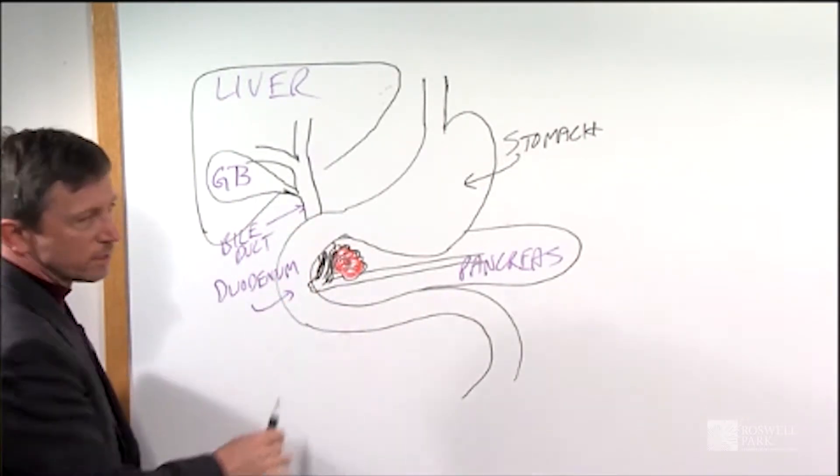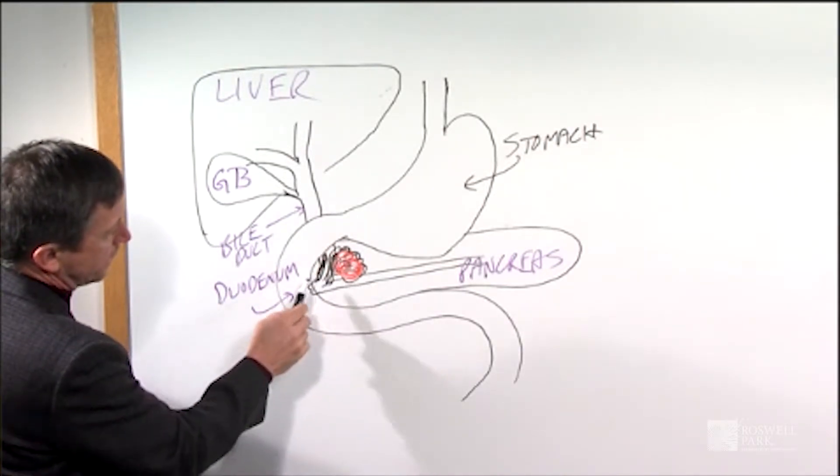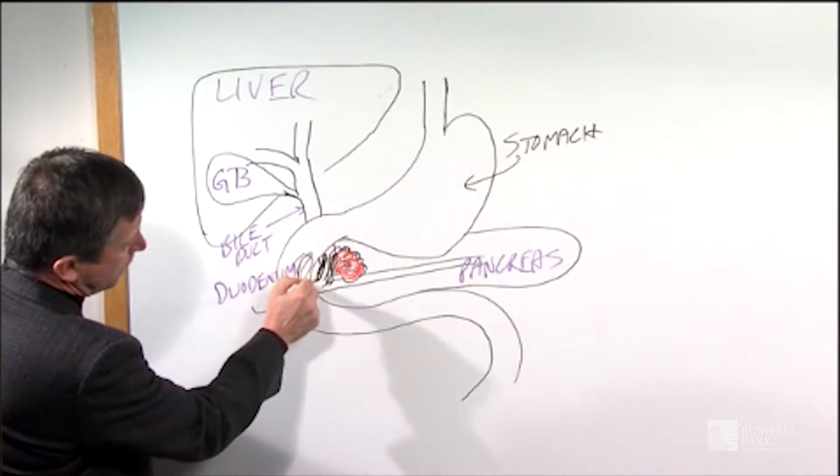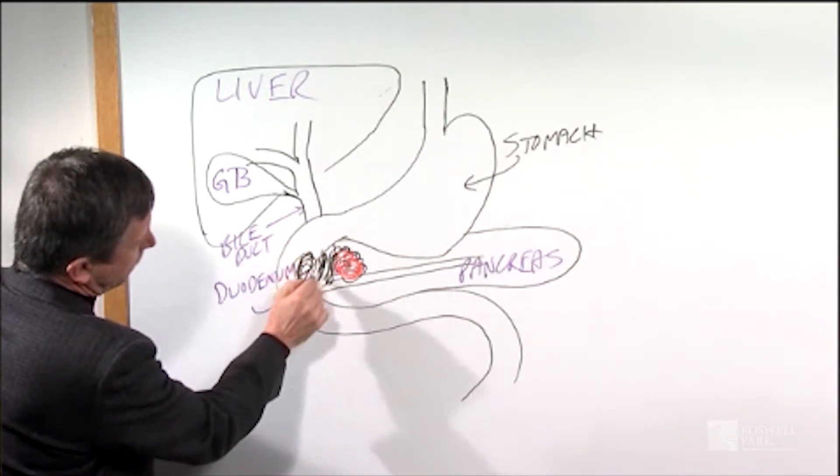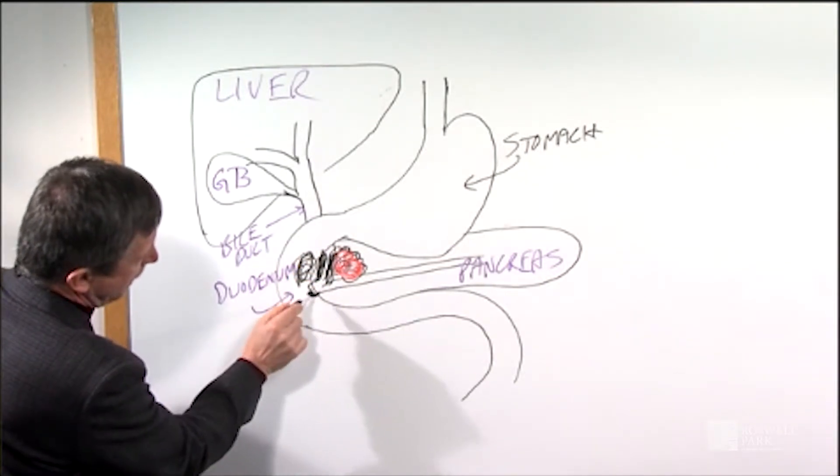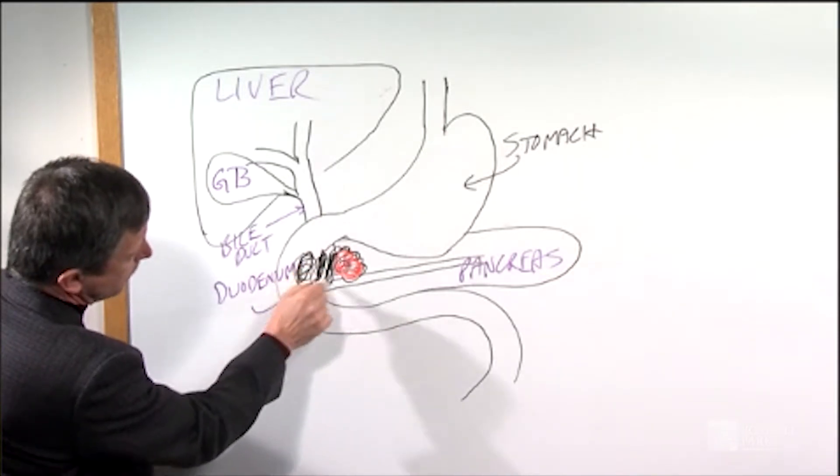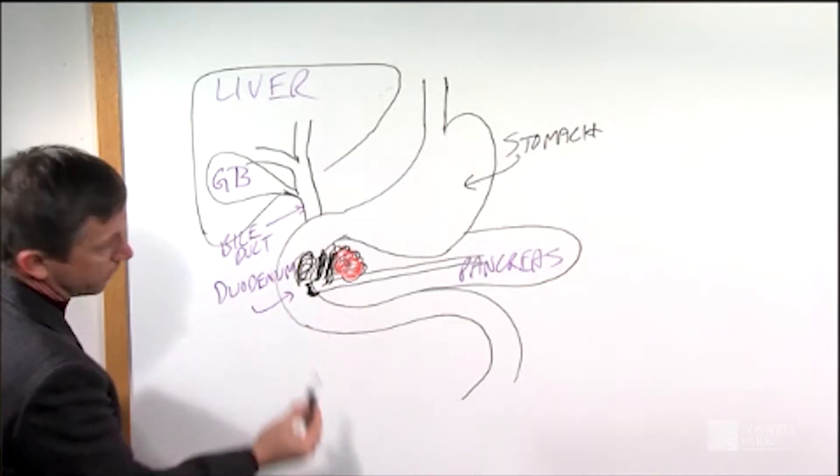But I want to make the point that we do the Whipple procedure for other types of cancers, not just pancreas cancer, but you can have a cancer here in the first part of the intestine called the duodenum, or a cancer of the bile duct, for example, right here, or even a cancer of this little valve here called the ampulla. And if there's a cancer in any of these locations, you can get obstruction of the bile duct and turn yellow.